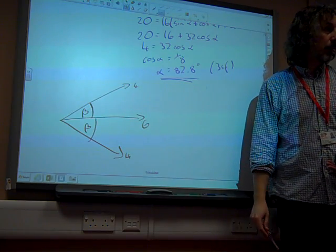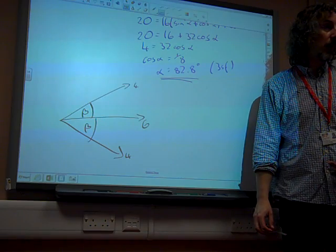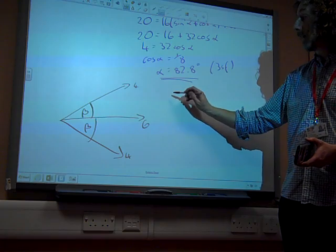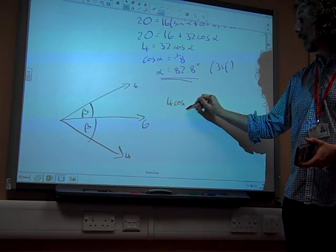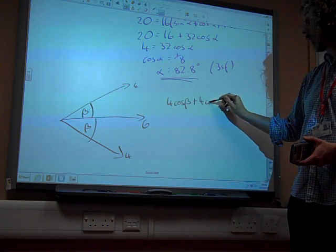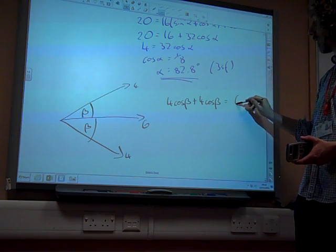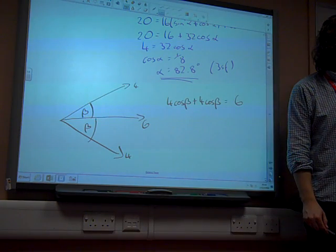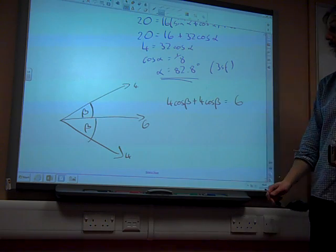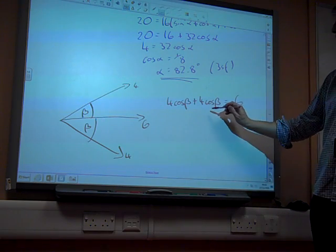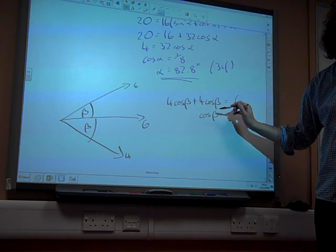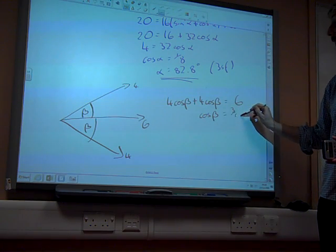And then, all I could do is, if I now resolve in the horizontal direction, I can say that 4 cos beta plus 4 cos beta produces a resultant force of 6 Newtons, which gives us cos beta. 8 cos beta is 6, so cos beta is 3 quarters.